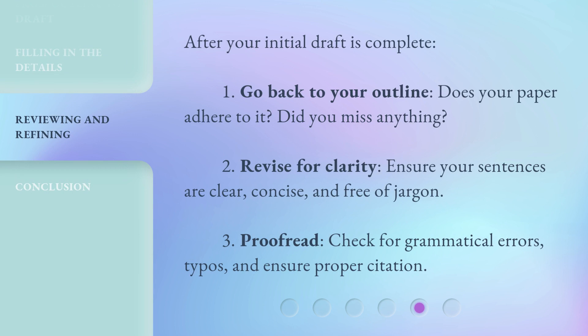After your initial draft is complete: first, go back to your outline — does your paper adhere to it? Did you miss anything? Second, revise for clarity and ensure your sentences are clear, concise, and free of jargon. Third, proofread: check for grammatical errors, typos, and ensure proper citation.